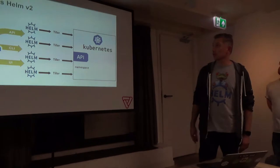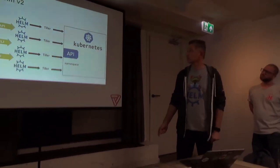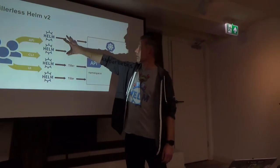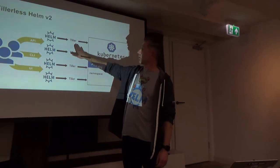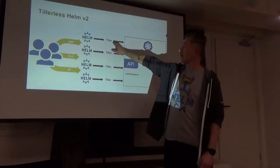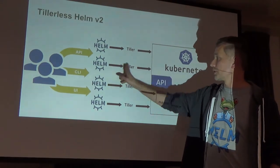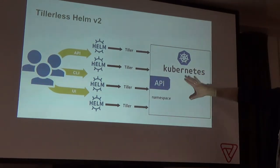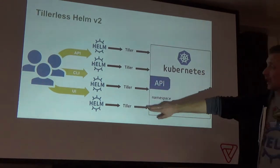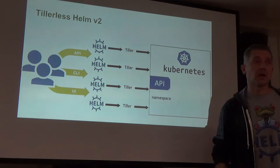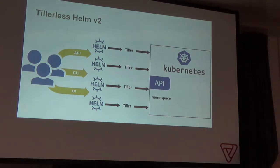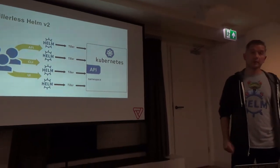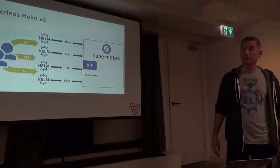Afterwards it looks like this: many Tiller and Helm combinations. Could be API, CLI, or UI — whatever you could have — and you connect to your cluster. Everyone gets a different kubeconfig file, different RBAC rules for that user, and we deploy to a particular namespace we are allowed to.